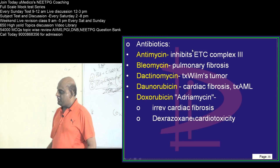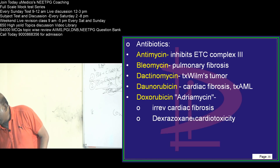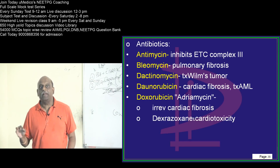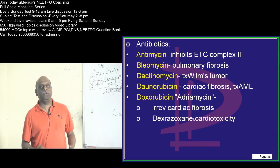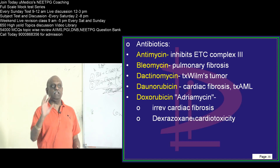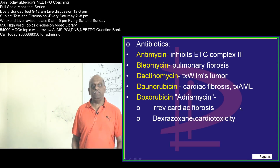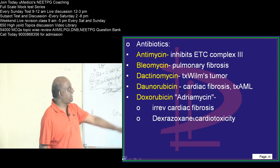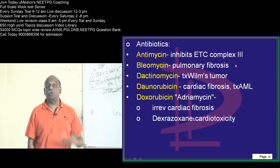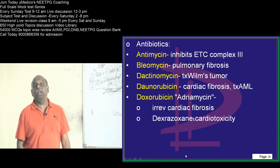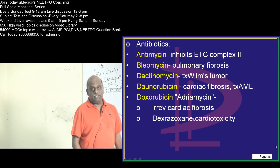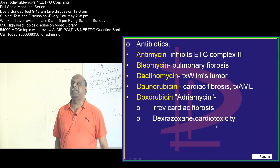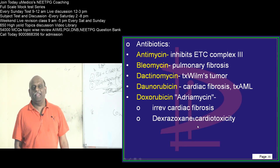There are certain anti-cancer drugs which typically function as antibiotics that you need to remember. Actinomycin acts on the electron transport chain at complex 3 — that is the single point to remember. Bleomycin — pulmonary fibrosis. Dactinomycin is used in the treatment of Wilms' tumor. Daunorubicin is used in AML and can lead to cardiac fibrosis — at least 50–60 times this question was asked. Doxorubicin is also called adriamycin and can lead to irreversible cardiac fibrosis; to manage its cardiotoxicity, dexrazoxane is administered.